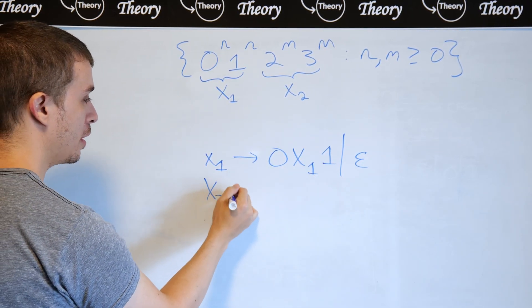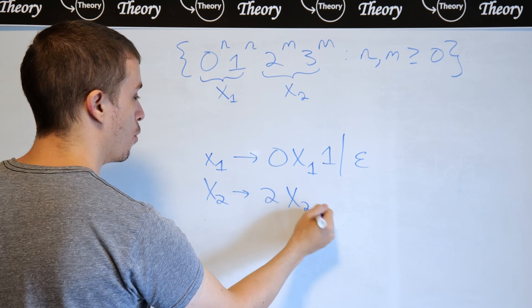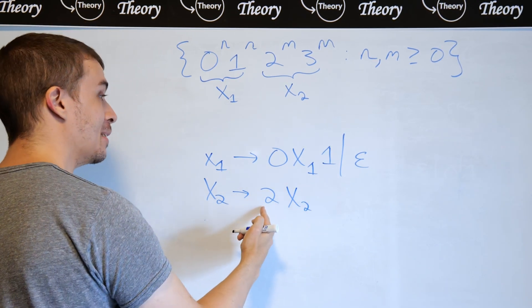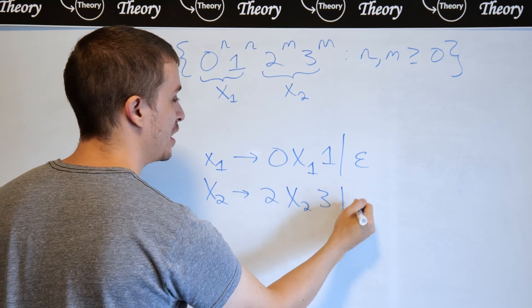And then x2 is going to be exactly the same idea, but with x2 and 2 and 3 as the terminals instead of 0 and 1.